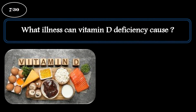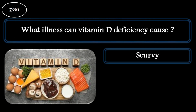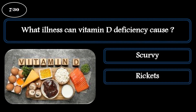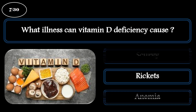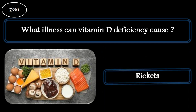Question 7. What illness can vitamin D deficiency cause? A: Scurvy. B: Rickets. C: Anemia. The correct answer is rickets.